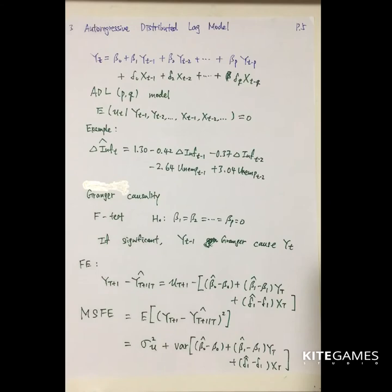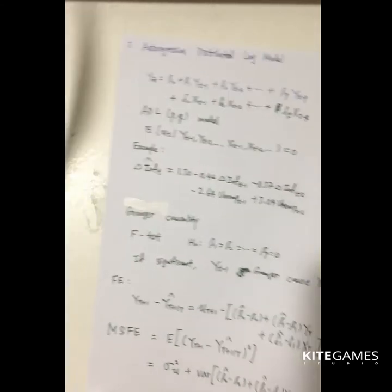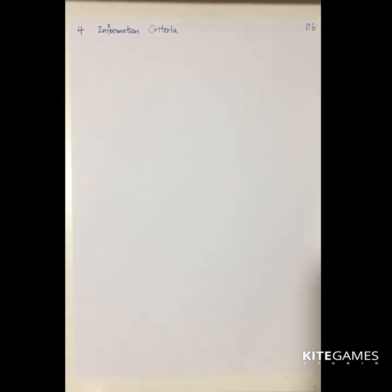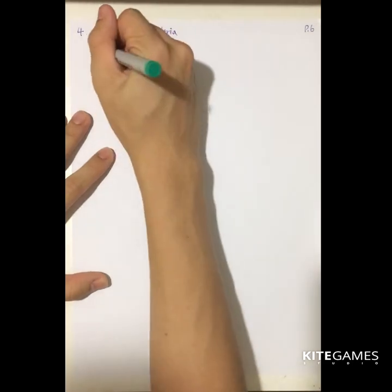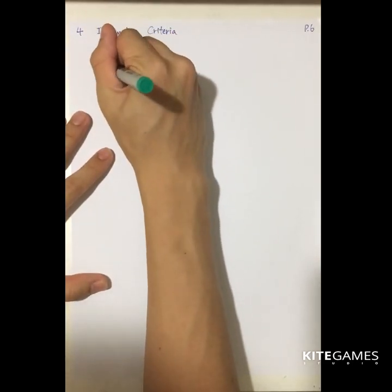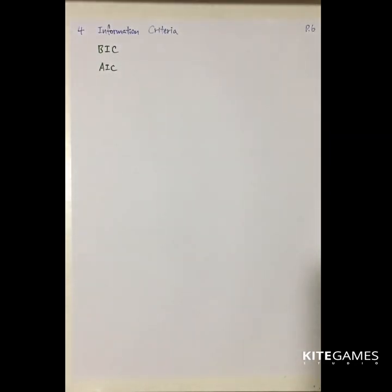At the end, we will talk about the information criteria. Basically, we have two information criteria, one is called BIC, and the other one is called AIC. So what is the information criteria means?